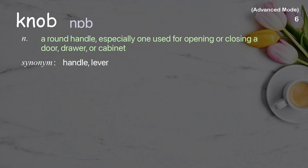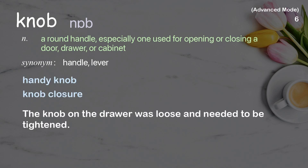Knob: a round handle, especially one used for opening or closing a door, drawer, or cabinet. Examples: handy knob, knob closure. The knob on the drawer was loose and needed to be tightened.